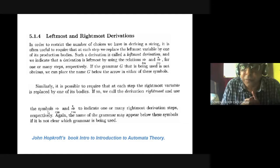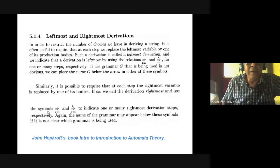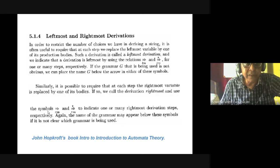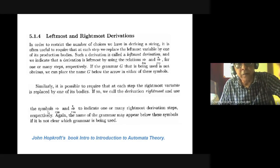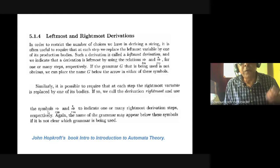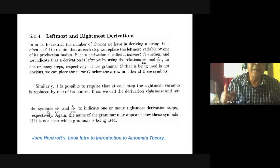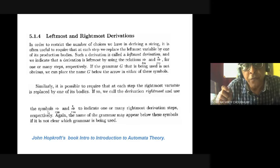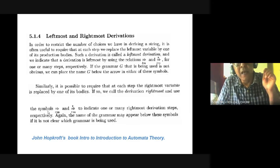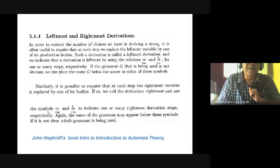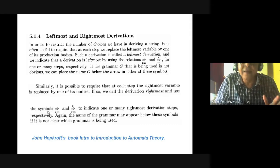Whenever you are given a string of terminals and you start from S, you can start your derivation. Whether you want derivation from the left-hand side — from the left-hand side, any variable is there — you try to derive it first. Whenever you get the right-hand side with maybe two or three variables, do not expand all of them in parallel. Either you go for the leftmost variable to derive more — that is called leftmost derivation. Another technique is rightmost derivation, where you go to the rightmost variable.